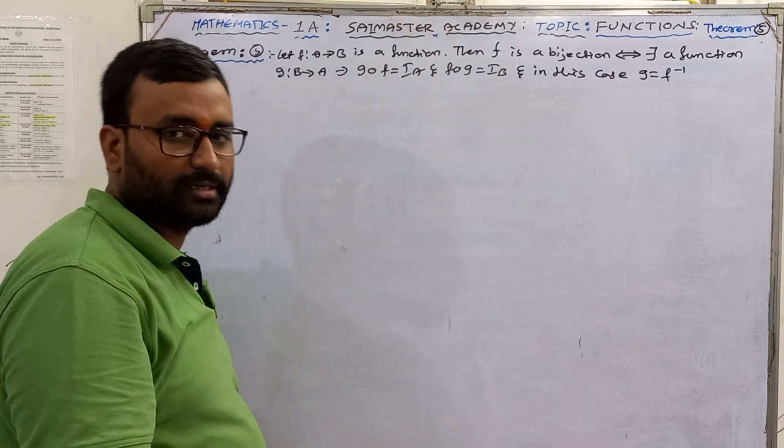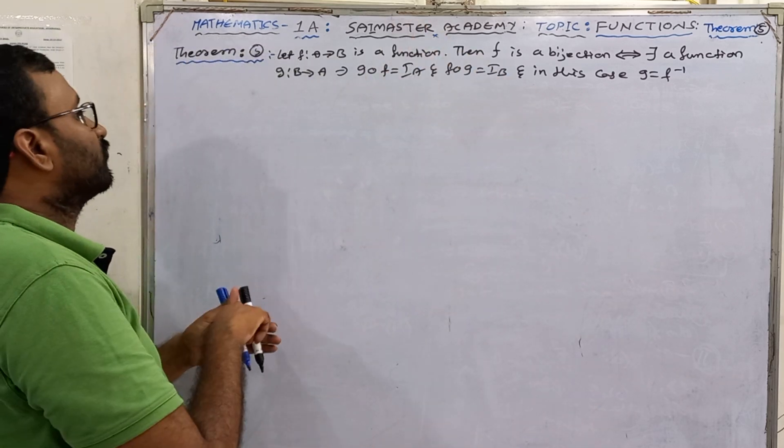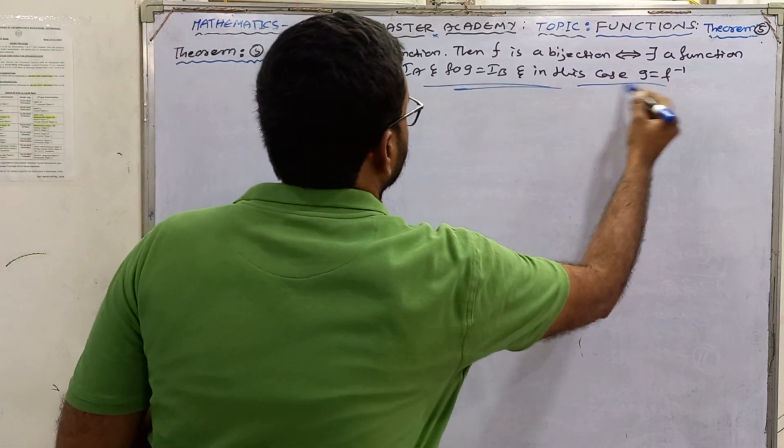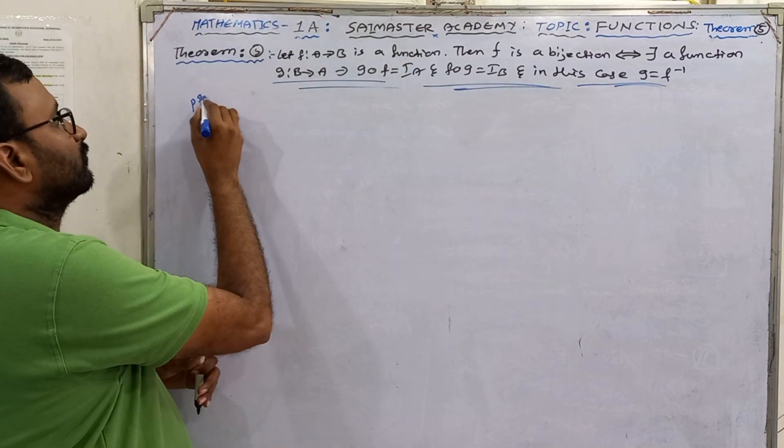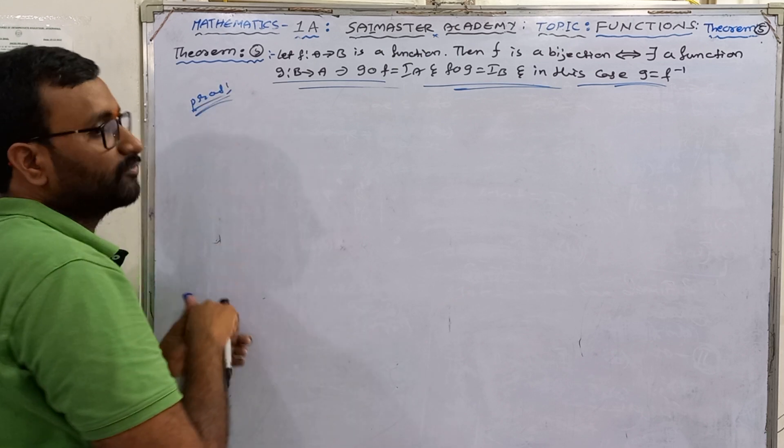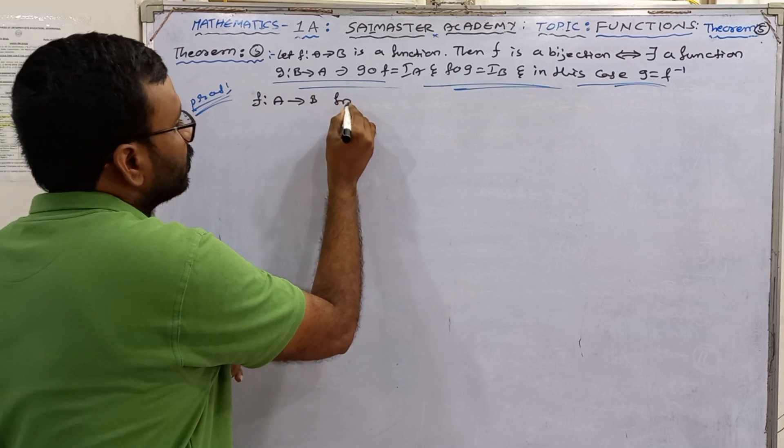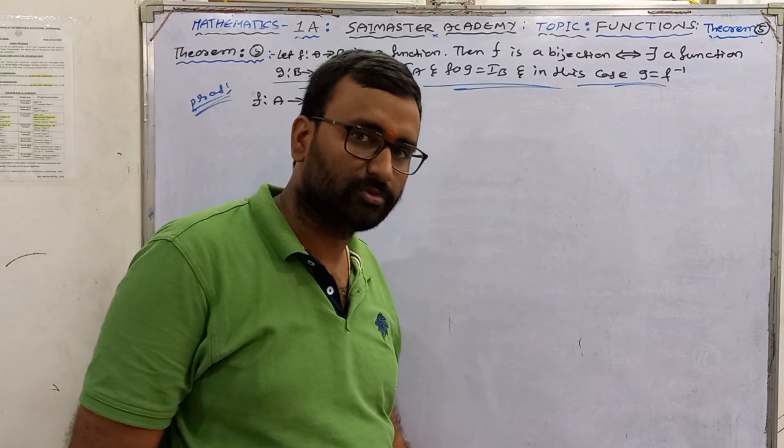F is a function. Let F be a function. So proof I am writing. F is a function, F from A to B is a function. F of A equal to B. Use this.